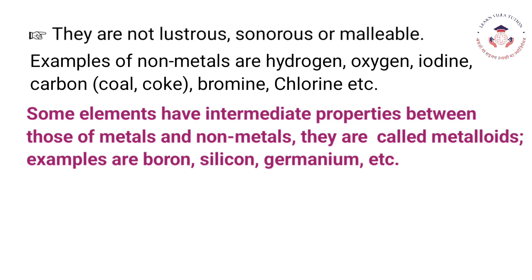Some elements have intermediate properties between those of metals and non-metals. They are called metalloids. Examples are boron, silicon, and germanium, etc.